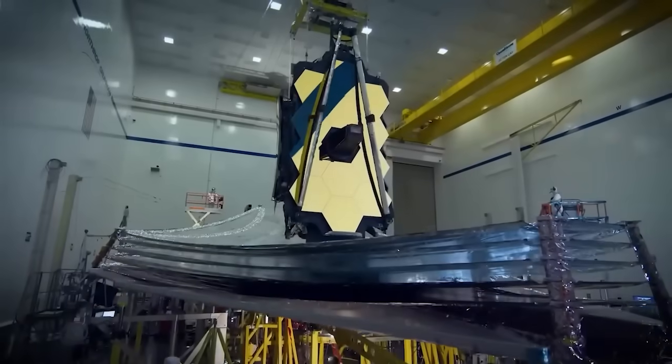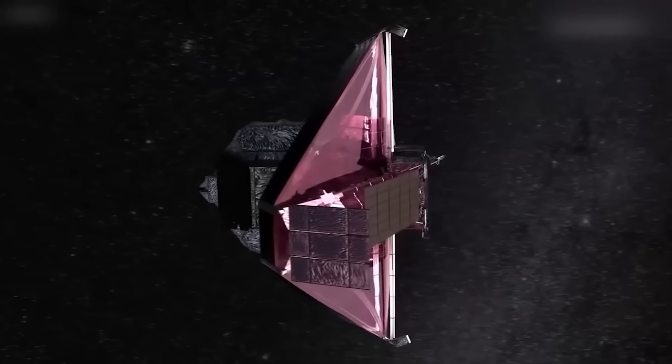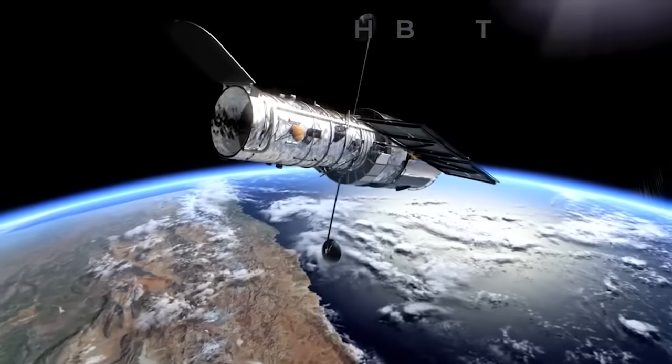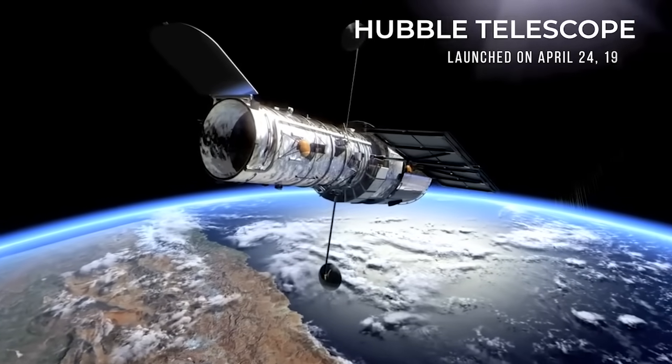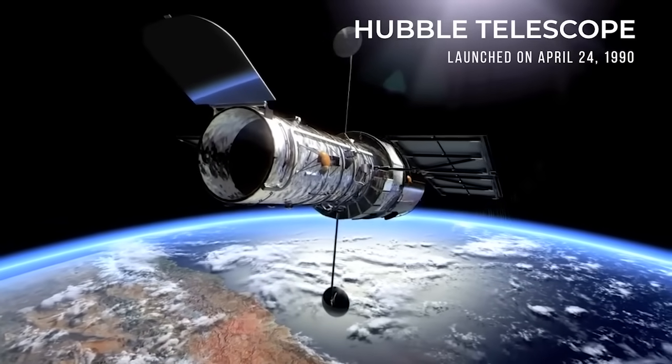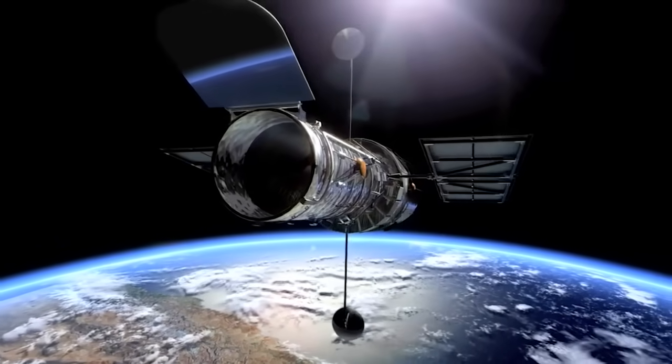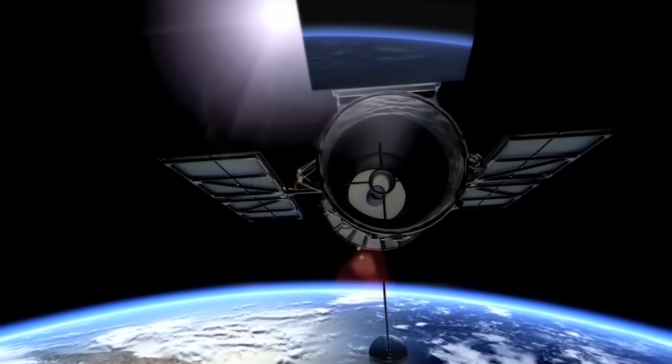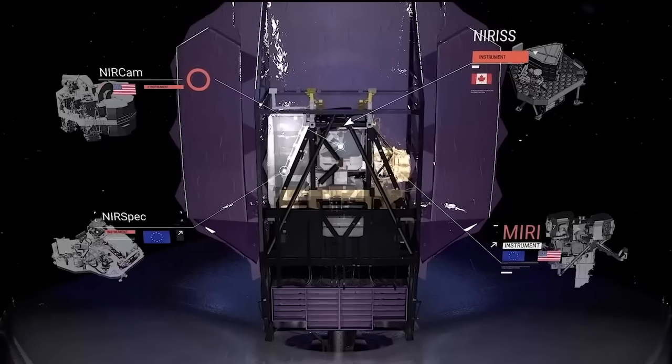The James Webb telescope design project was initiated to replace the Hubble telescope, launched on April 24, 1990. While Hubble focuses primarily on visible light, the four science instruments of the James Webb are designed to capture infrared light in particular.